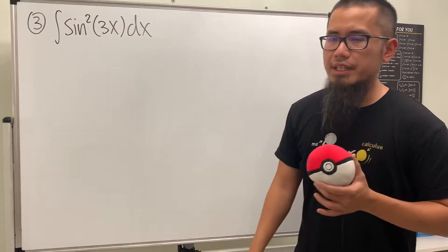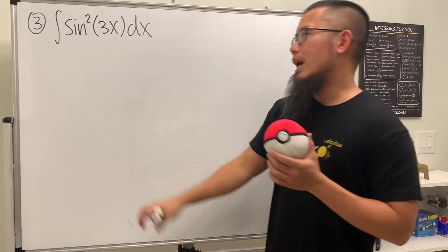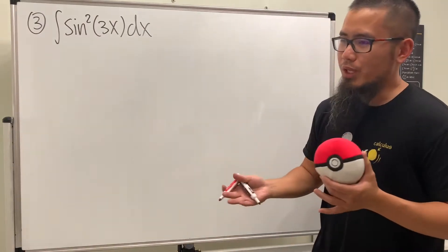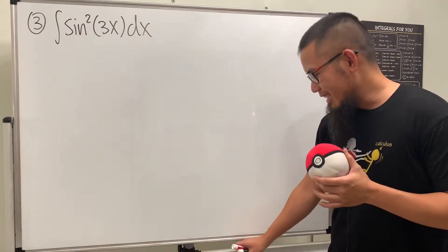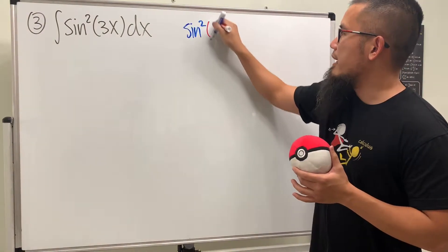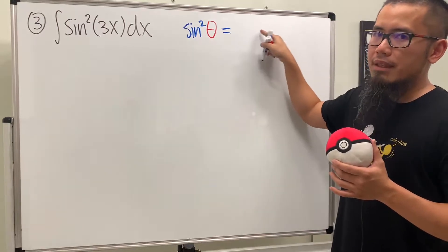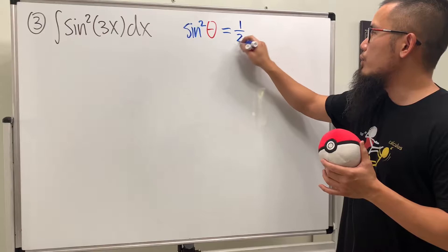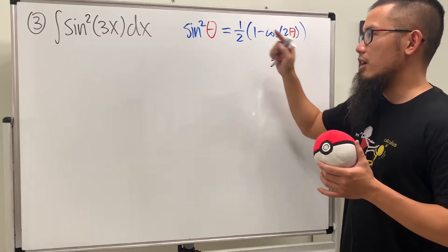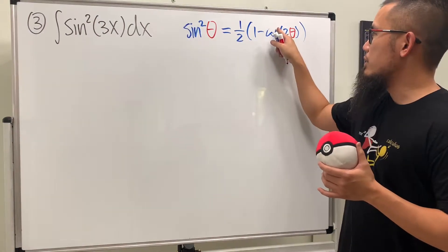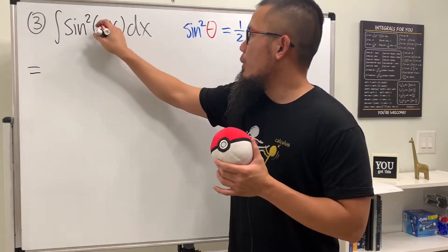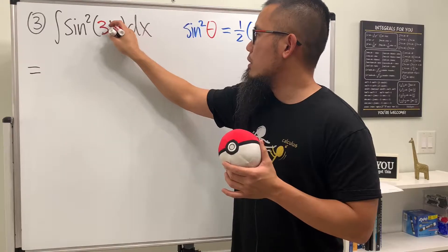For number three we have the integral of sine squared of 3x. We have an even power for sine and there's no cosine to help us, so we need another identity. We'll look at sine squared theta as one half times one minus cosine of two theta. This is the one that actually helps us — here we have the second power but after applying the identity it's only the first power. So we let theta equal 3x and use this identity.